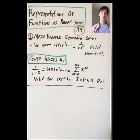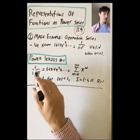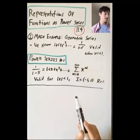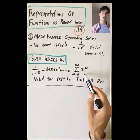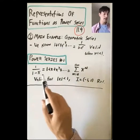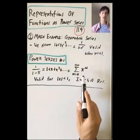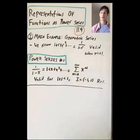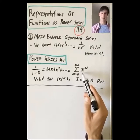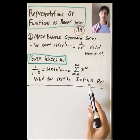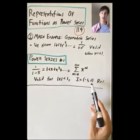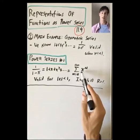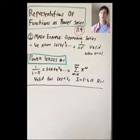Our first main representation of a function as a power series is: the function 1 over 1 minus x is equal to 1 plus x plus x squared plus — it's a sum from n equals 0 to infinity of x to the n. This power series is equal to this rational function whenever the power series converges, which is valid whenever the absolute value of x is less than 1. That is, x is in the interval from minus 1 to 1, which has radius of convergence 1.